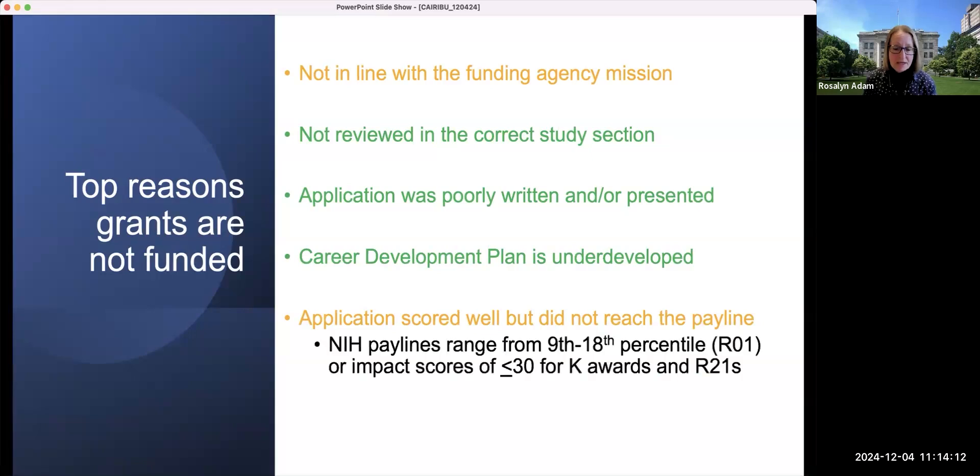Just for context, NIH pay lines range from the ninth to the 18th percentile for R01 applications. And so if you do the arithmetic, that means that close to 80% of grants are not reaching the pay line, and they may score quite well. Similarly, for K awards and R21s impact scores of less than or equal to 30 are generally required to position your application within or close to the pay line. And so the reality of all of this is that most grants are actually not funded at any given time, and that brings us to this point of having to revise and resubmit.